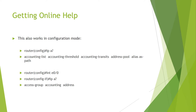This also works in configuration mode. Router(config)# ip ? shows: accounting-list, accounting-threshold, accounting-transit, address-pool, alias, as-path, and more.